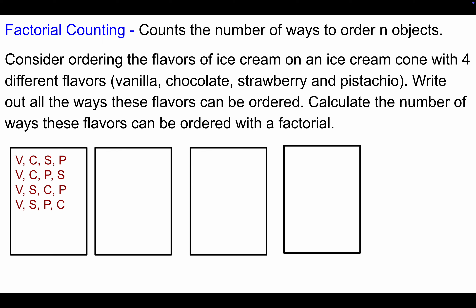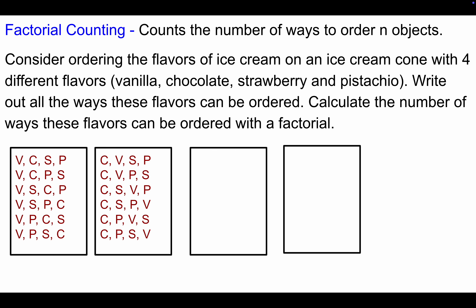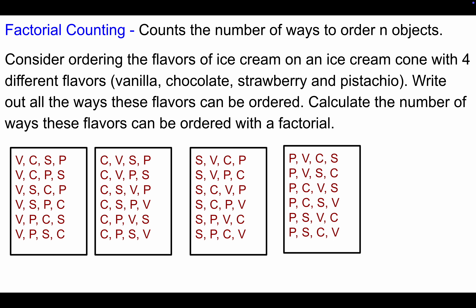We continue by starting with chocolate, then strawberry, then pistachio as the first flavor — each giving six different arrangements. So we have four boxes, each with six different arrangements, giving us 4 times 6, which is 24. We can also calculate this using a factorial: 4 factorial equals 4 times 3 times 2 times 1, which equals 24.